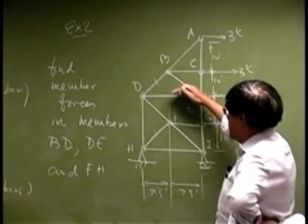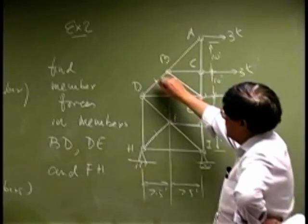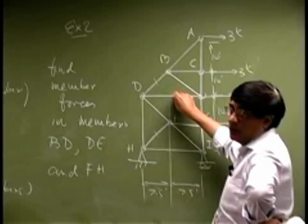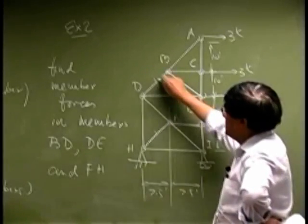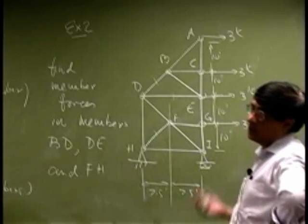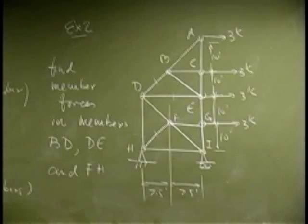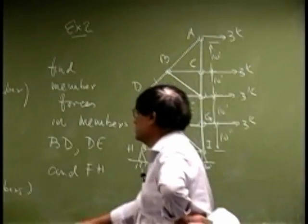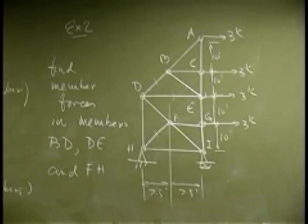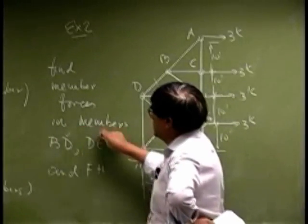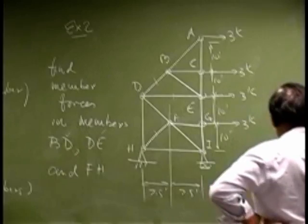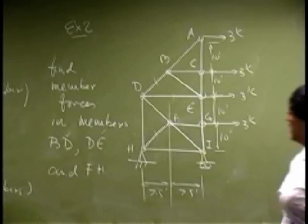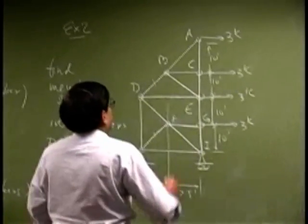Now, when you get a problem like this, if you notice you have 2 members together then 1 is here. If I pass the section which goes like this then there will be too many unknown forces on the free body diagram. We need to work through this problem in 2 steps.